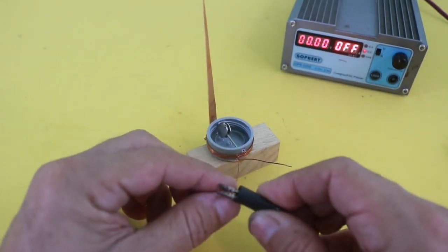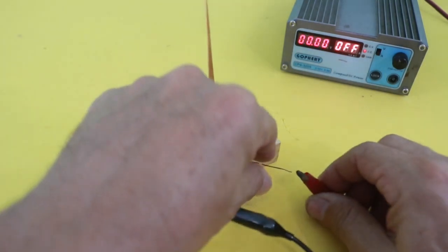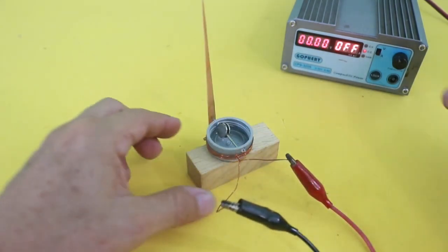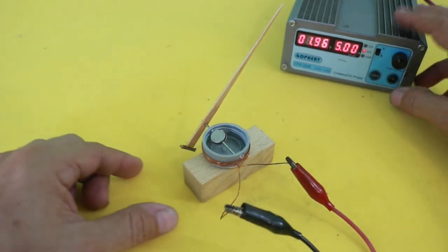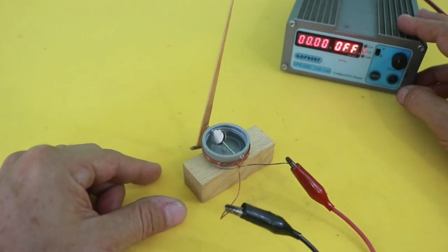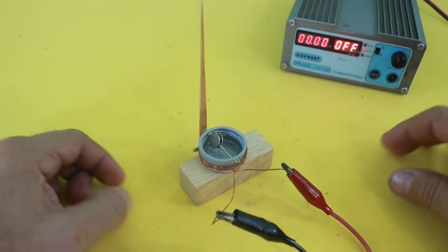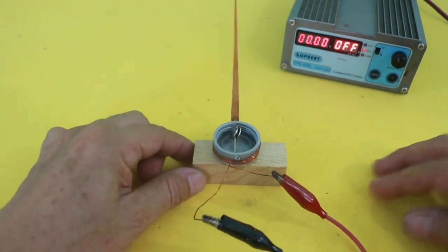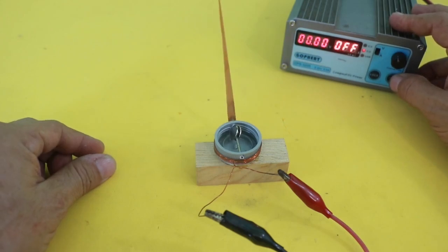Let me connect the power supply. And when you turn on the power supply, the needle moves, indicating that we have a current circulating through the coil.